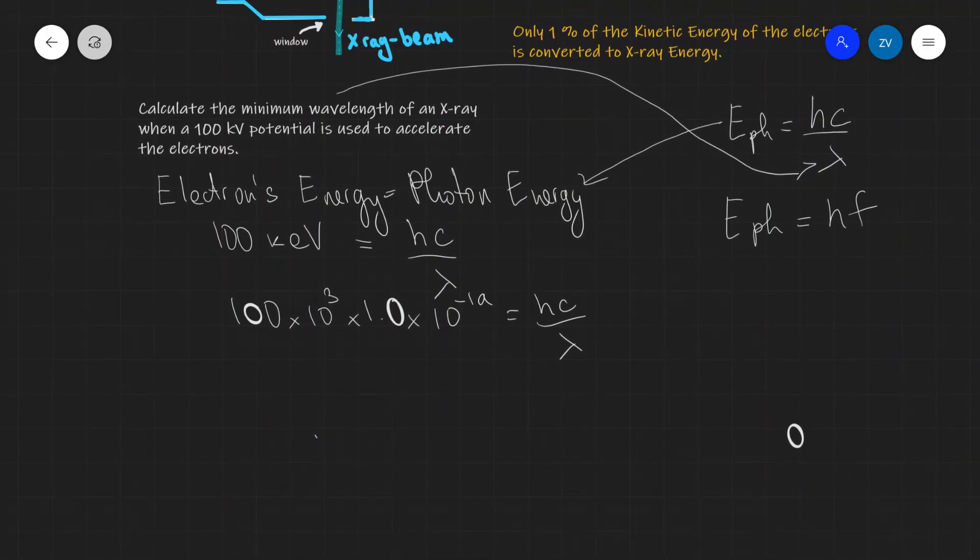I can directly rearrange for lambda now, and we're going to get that lambda is equal to hc, h times c divided by 100 times 10 to the power of 3 times 1.6 times 10 to the power of minus 19, like so. And let's plug in some values as well. So h is 6.63 times 10 to the power of minus 34. This is just Planck's constant.